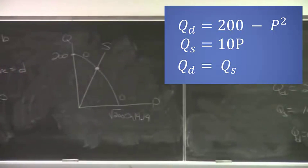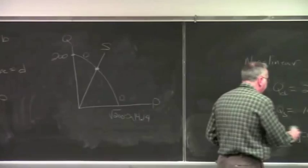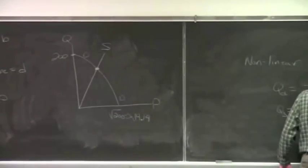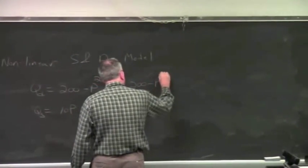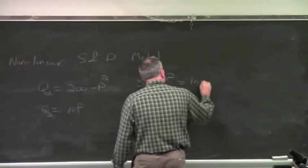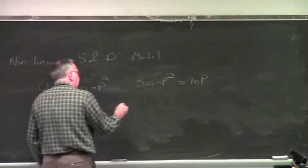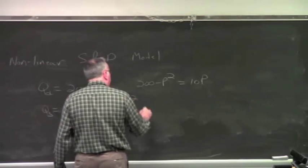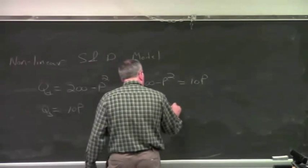And supply will intersect demand in this positive quadrant. And that will be the equilibrium point. Let's see if we can solve mathematically for what that will be. If we set demand equal to supply mathematically, we'll get 200 minus P squared equals 10P. And the way you would solve this equation is to get it in the form of a quadratic equation. So get everything over on the left-hand side. So we'll have minus P squared minus 10P plus 200 equals 0.